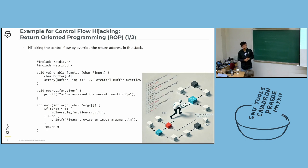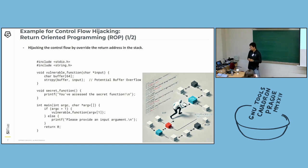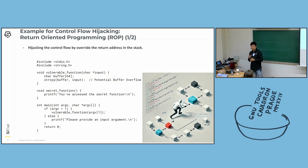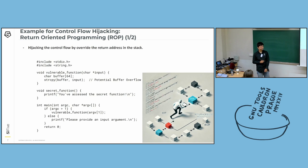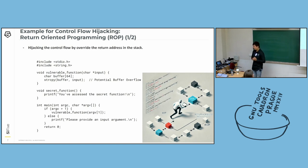Here is an example of a common control flow hijacking called return-oriented programming. This is control flow hijacking by overwriting the stack, especially overwriting the return address. Here is an example — of course this code is only for demo purposes, so don't be too serious about it. It's a very buggy program — string copy without buffer checking, which means it can cause a buffer overflow. That's what we want today: buffer overflow to override the return address.